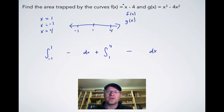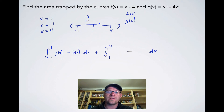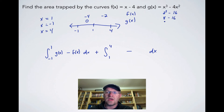So the first integral is from negative one to one of g of x minus f of x dx. For the interval from one to four, we pick x equals 2. Plugging into f of x: 2 minus 4 equals negative 2. Plugging into g of x: 2 cubed minus 4 times 2 squared equals 8 minus 16 equals negative 8. Since f of x has the higher value, f of x is on top for this interval.